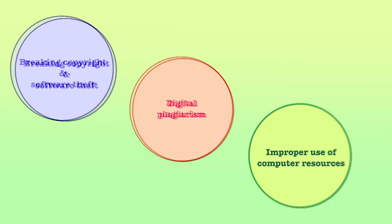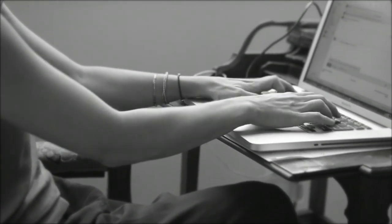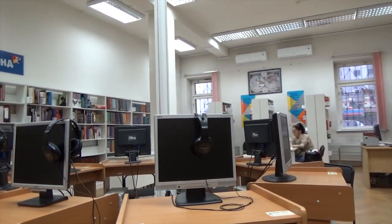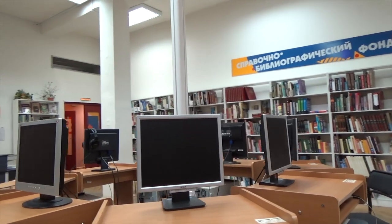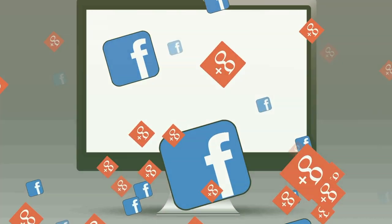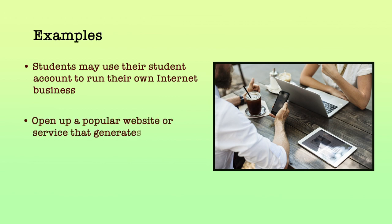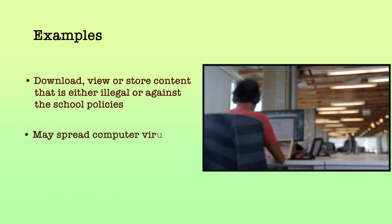The third unethical act is improper use of computer resources. Students and staff may have authorized access to computer resources but then go on to use these resources improperly. They may have a school or library internet account, or may use a computer system, network or software owned by the institution in a way that does not meet the institution's standards. For example, students may use their student account to run their own internet businesses, open up popular websites, or download MP3 files. Staff members may use the institution's server to download, view or store illegal content or may spread computer viruses or worms.